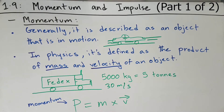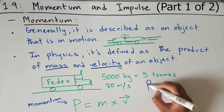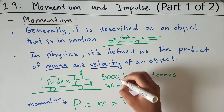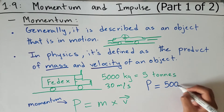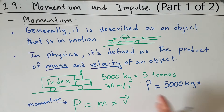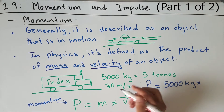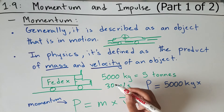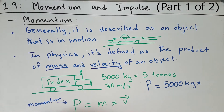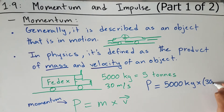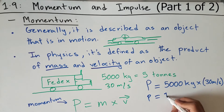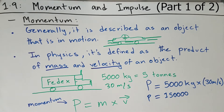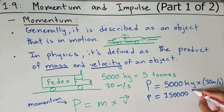So let's find the momentum of this truck using this formula. We know that momentum P equals the mass, which is 5,000 kilograms, times the velocity of this truck. And since it's driving in the rightwards direction, it has a velocity of positive 30 meters per second. If it were traveling leftwards, it would be negative 30 meters per second. So this gives us 150,000 kilograms times meters per second.